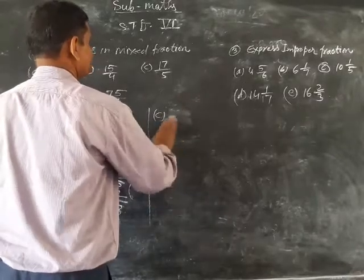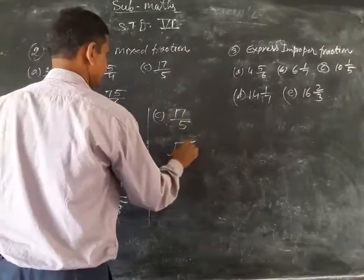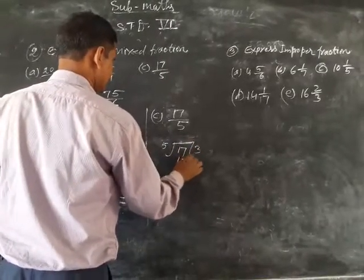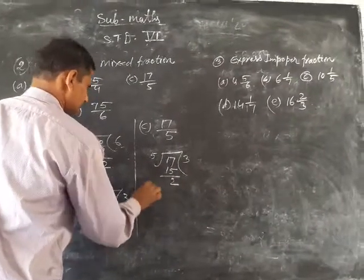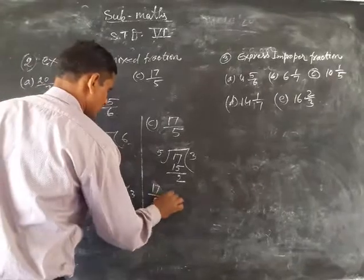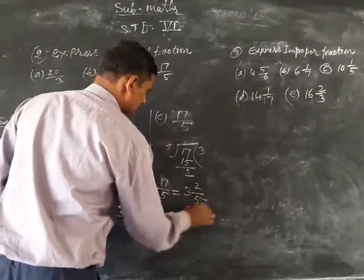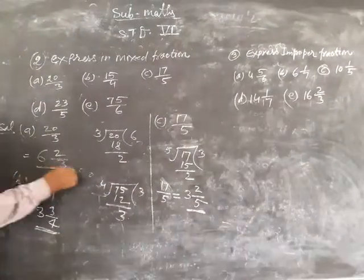Part c: 17 upon 5. So 17 divided by 5. 5 times 3 is 15, remainder 2. So 17 upon 5 equals 3 and 2 upon 5. This is called mixed fraction.